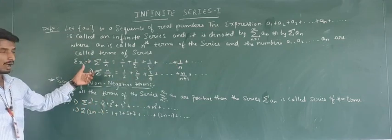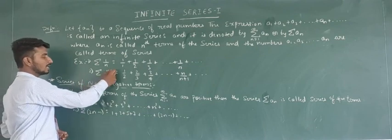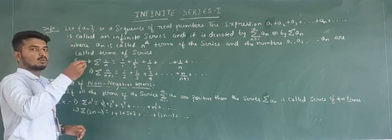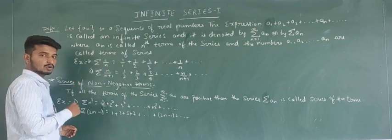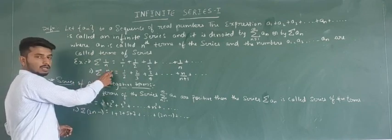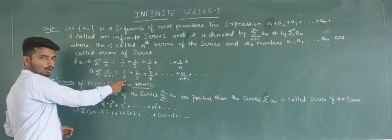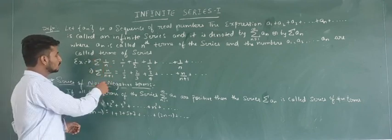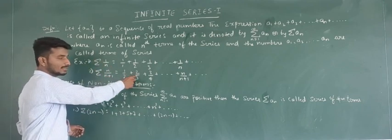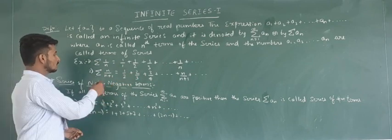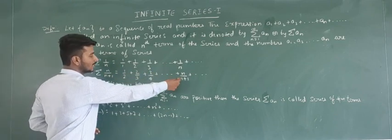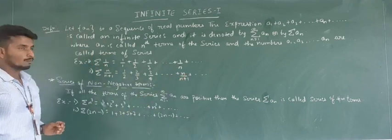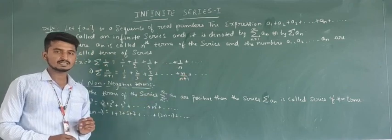Similarly, another example is the summation of n/(n+1). If we substitute n = 1, the first term a1 = 1/(1+1) = 1/2. If we substitute n = 2, the second term a2 = 2/(2+1) = 2/3. Similarly, we get the third term and finally the nth term, which is n/(n+1) + and so on.